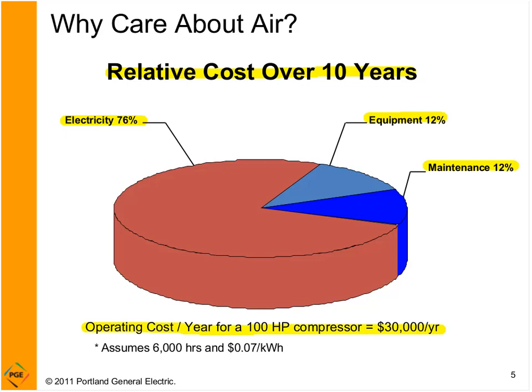The cost to operate a 100-horsepower compressor over a year is about $30,000, assuming 6,000 operating hours at 7 cents per kilowatt-hour — that's a Monday through Friday around-the-clock shift. That $30,000 operating cost is just under the purchase price of a new 100 HP compressor. So right out of the gate in one year you've essentially doubled the cost.